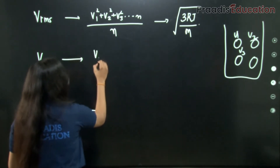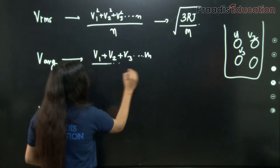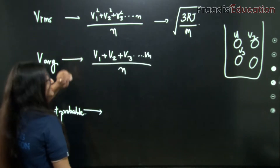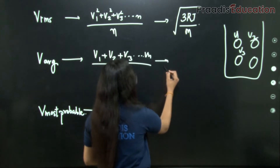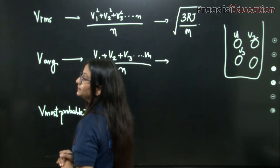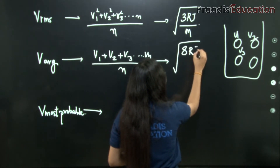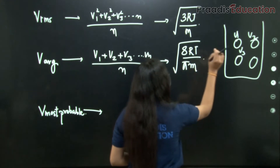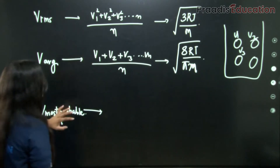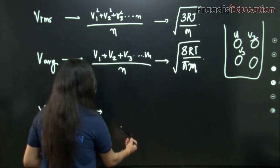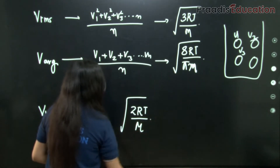For v_average, we simply add the speeds and divide by n: v_avg = (v1 + v2 + v3 + ... + vn) / n — no squaring or square root. The derived formula is v_avg = √(8RT/πM), where M is the molar mass (capital M). For v_most_probable, the formula is v_mp = √(2RT/M).